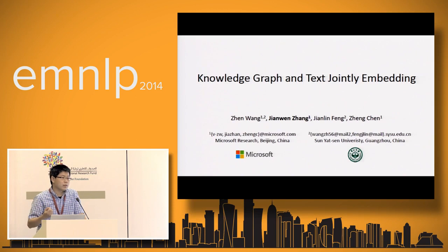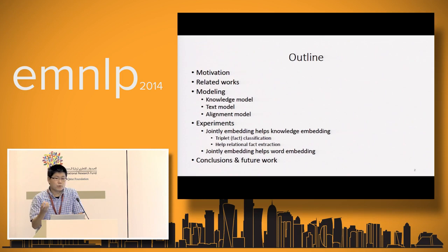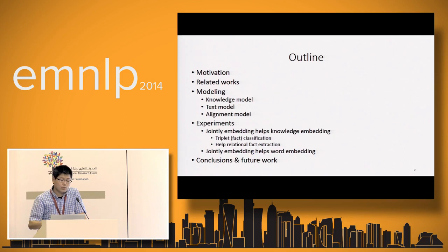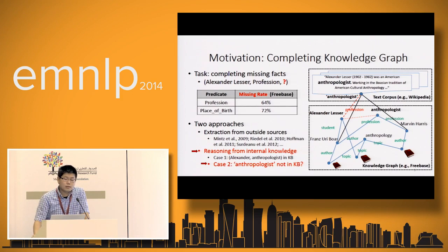This work is about how to represent the entities and the world in the same vector space. The outline: after the motivation, the modeling will include three parts — how to represent the knowledge, how to model the text, and how to guarantee the entity and the world are developed in the same space. In the experiments, I will report two sets of experiments on how the joint embedding helps the knowledge embedding and also helps the word embedding. There will also be one experiment about how the embedding approach helps the relational fact extraction.